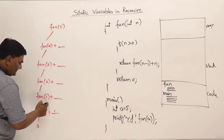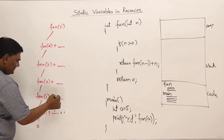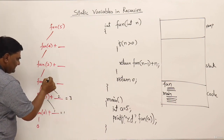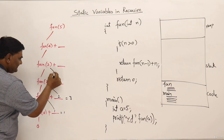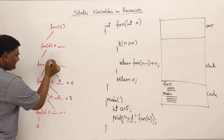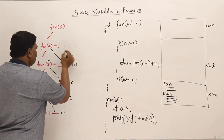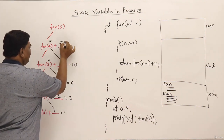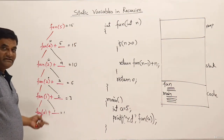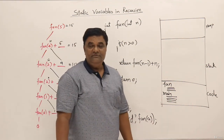Now it goes back: 0 plus 1 = 1, then 1 plus 2 = 3, then 3 plus 3 = 6, then 6 plus 4 = 10, then 10 plus 5 = 15. So the result of this function when called with value 5 is 15.